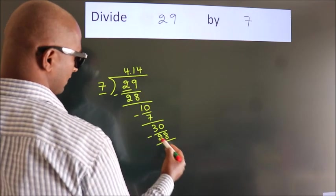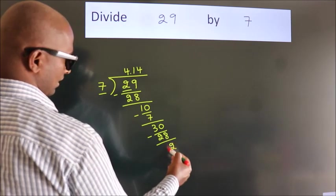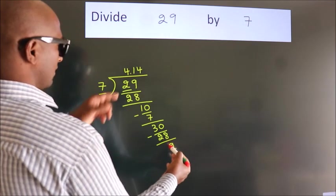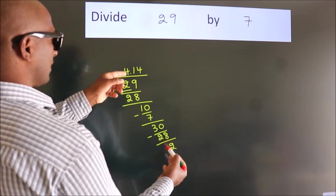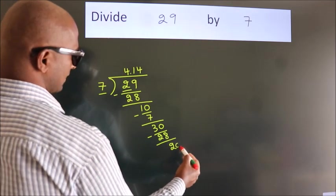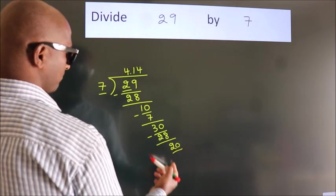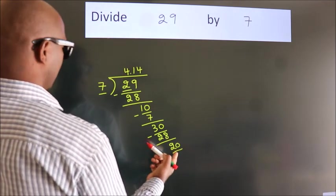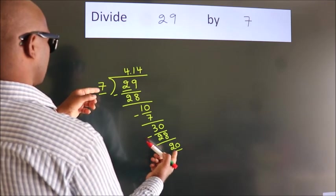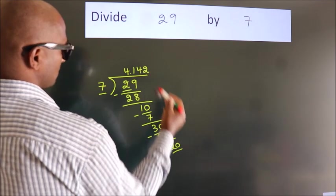Now we subtract. We get 2. After this, we already have the decimal, so directly take 0. So 20. A number close to 20 in the 7 table is 7 times 2 is 14.